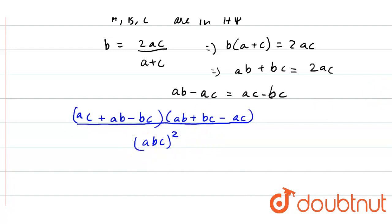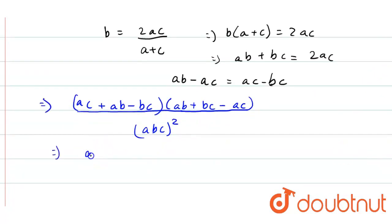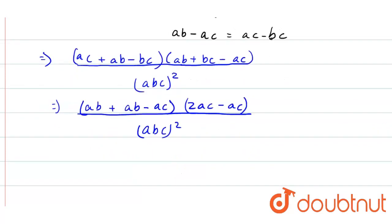So what will we get? (AB + AB - AC) into (2AC - AC) divided by (AC)(AB + BC) whole square. That is (2AB - AC).